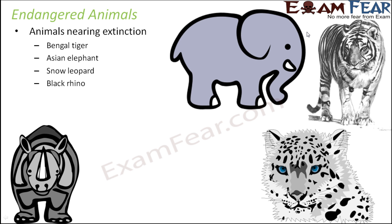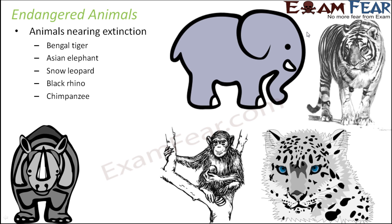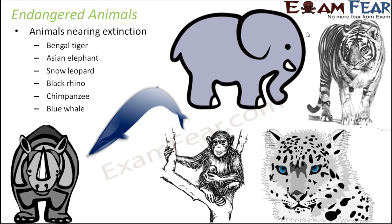The snow leopard, black rhino, chimpanzee, and blue whale are also examples of endangered animals because their numbers are diminishing very fast. Whatever animals are left, we are trying our best to conserve them and, if possible, increase their numbers through reproduction. We do not want to lose them.